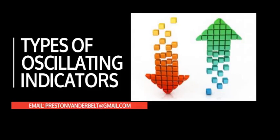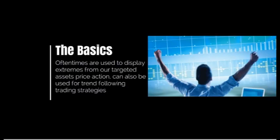Now, basics of oscillating indicators. It is important to understand that all indicators that exhibit oscillator type characteristics fluctuate either above or below a centerline, in between two values that dictate the current market condition of the asset. There are two types of oscillators: the first would be a centerline oscillator, and the second would be a banded oscillator.